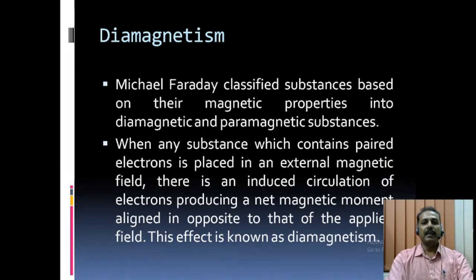Michael Faraday classified substances based on their magnetic properties into diamagnetic and paramagnetic substances. When any substance which contains paired electrons is placed in an external magnetic field, there is an induced circulation of electrons producing a net magnetic moment aligned in opposite to that of the applied field. This effect is known as diamagnetism.